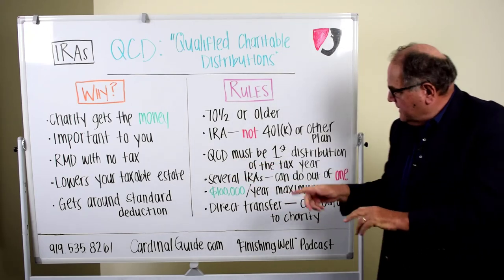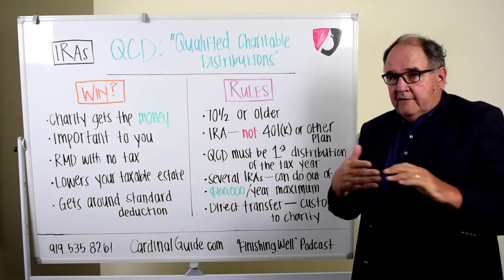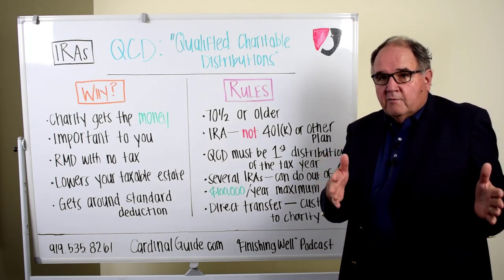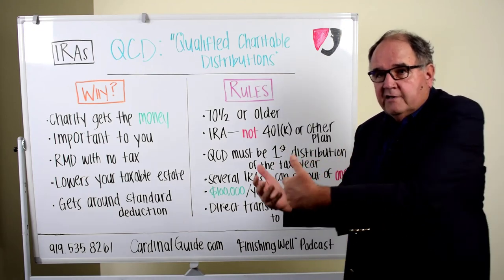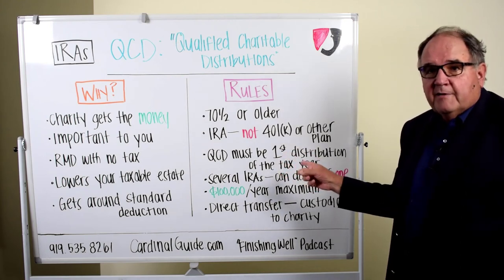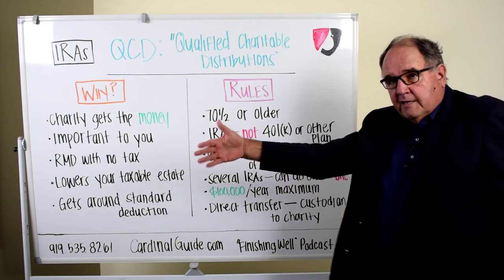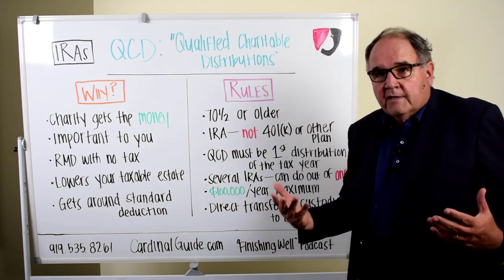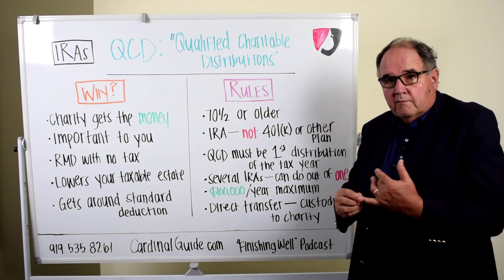QCDs must be the first distribution of the tax year. If you've already taken money out of your IRA and distributed it to yourself in 2021, you can't do a QCD now — you've missed that window for this year. The QCD needs to be the first money coming out of the IRA in any given year; after that, you can take more money out. So if you haven't taken any money out of your IRA yet and you're 70 and a half, we could consider doing one right now for this year.